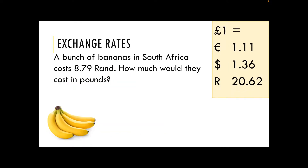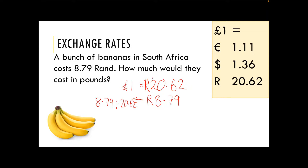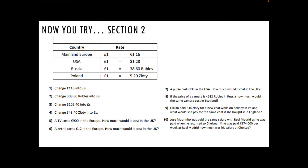A bunch of bananas in South Africa costs 8.79 rand. We want to know how much they would cost in pounds. One pound equals 20.62 rand, so my 8.79 rand divided by 20.62 gives us 0.426. Rounded to two decimal places that is £0.43 — or another way to think about it is 43 pence.